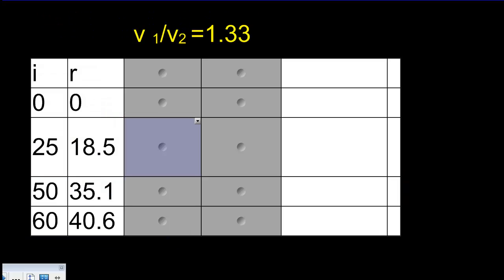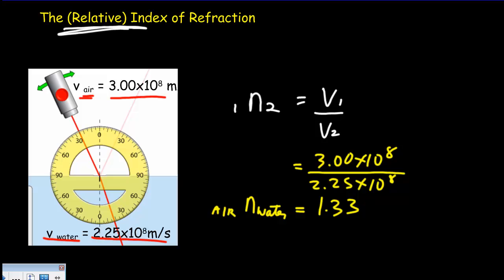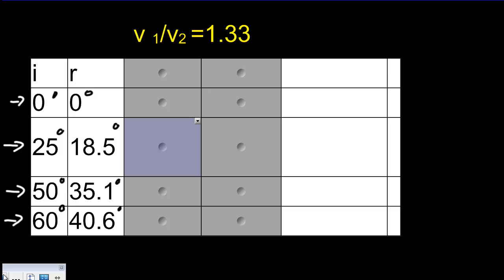Let's say we conduct a little experiment and set the angle of incidence to values of 0, 25, 50, and 60 degrees. Here's our angle of incidence, and we're measuring the angle of refraction. If we did that, these are the values of the angle of refraction we would get going from air into water. Notice that when we double the angle of incidence from 25 to 50 degrees, the angle of refraction does not quite double — it doesn't become 39 degrees. So we don't have a simple proportional relationship.